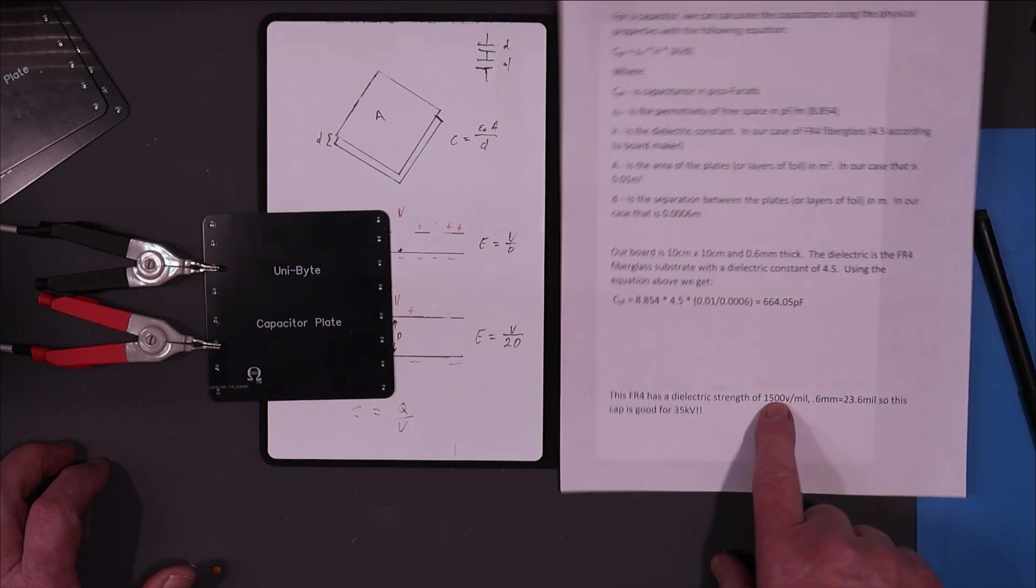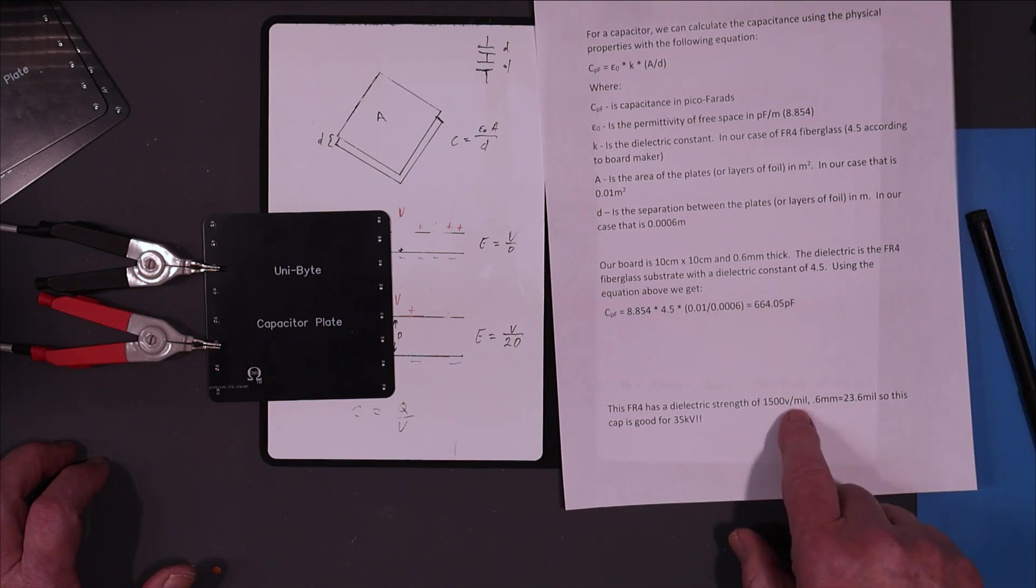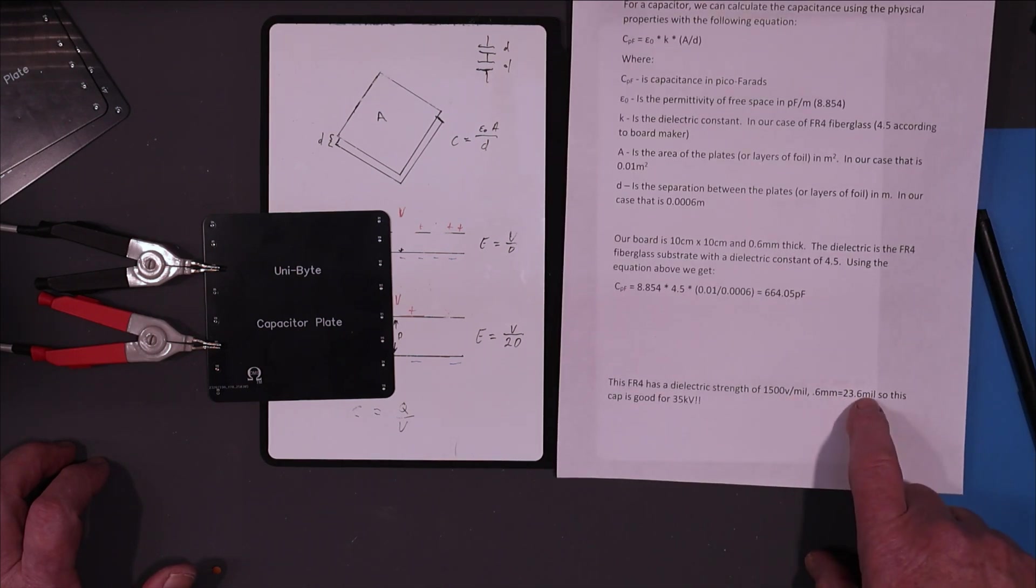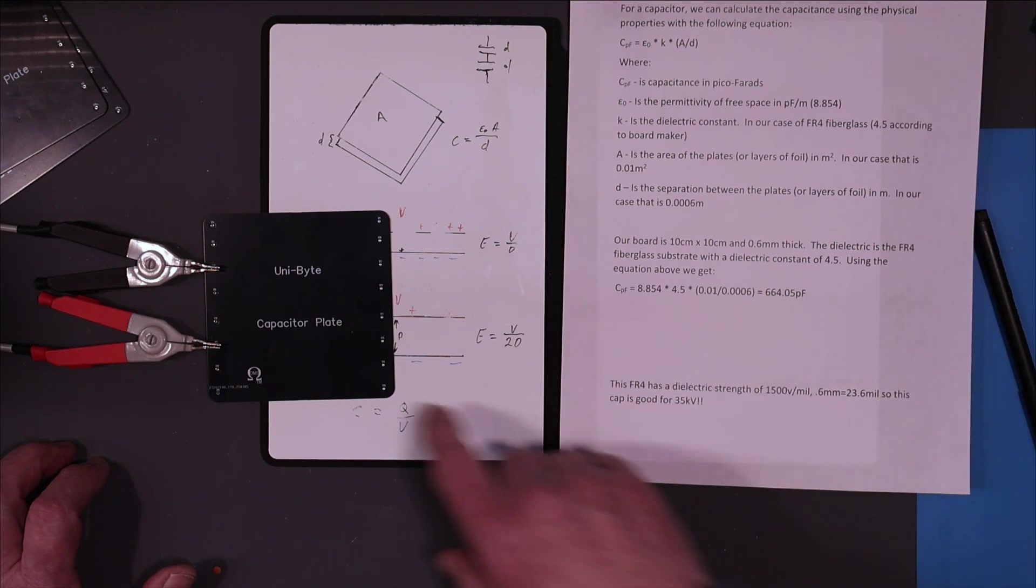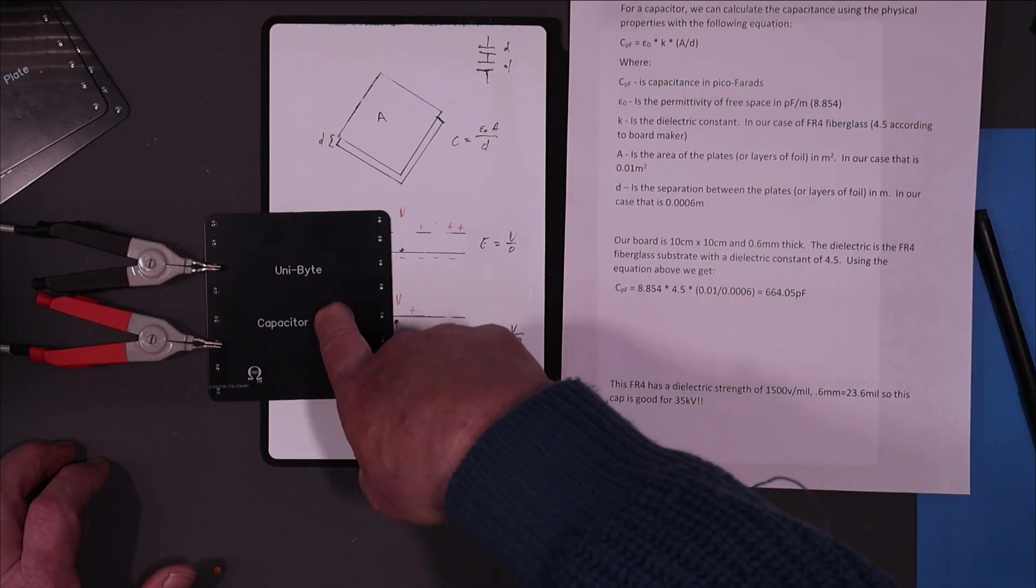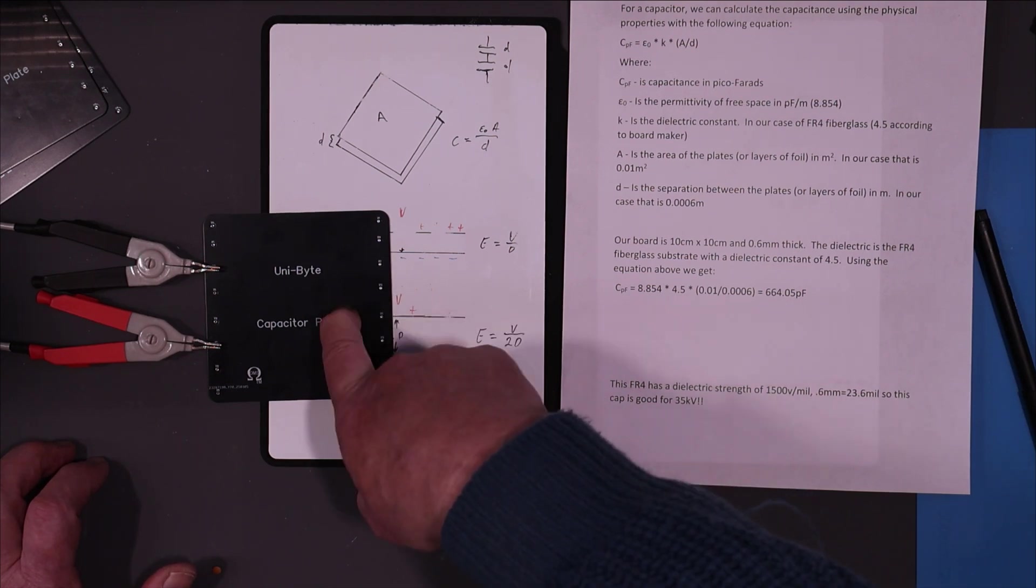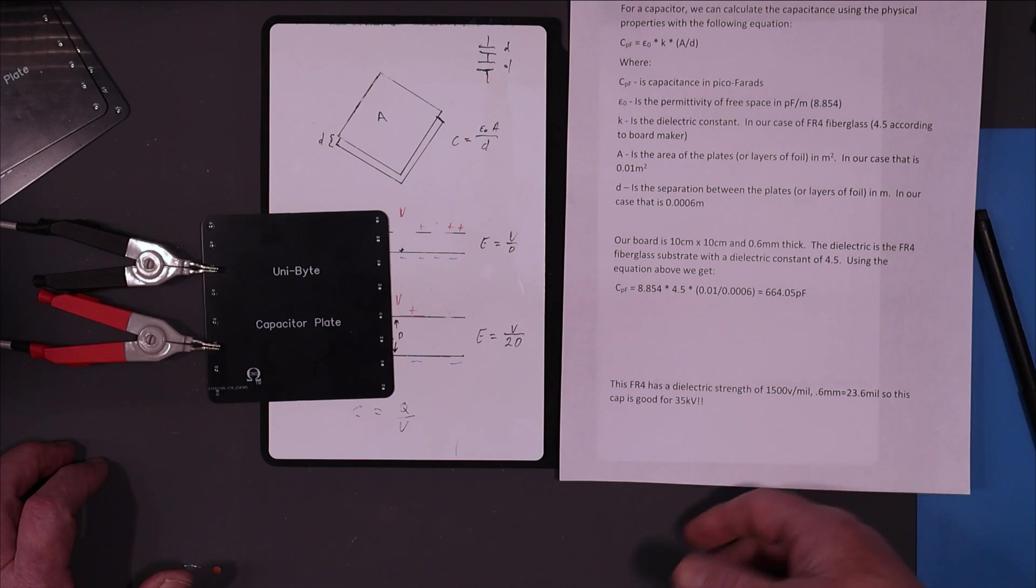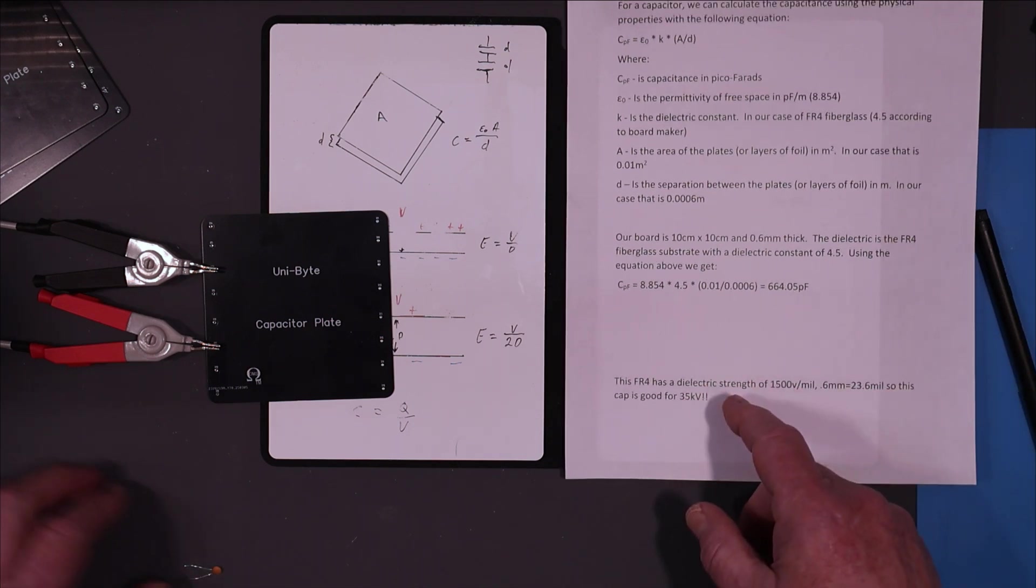The dielectric strength is 1,500 volts per mil. So we've got 0.6 millimeters, which is 23.6 mil. So this capacitor here is good for about 35,000 volts. I got five of these for $4 U.S. and that included the shipping, so that's about 80 cents a piece. I defy you to go out and find a 35,000 volt, 680 nanofarad capacitor for 80 cents.